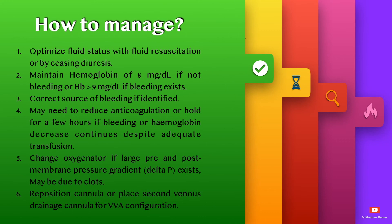How do we manage this issue? Optimize fluid status with fluid resuscitation or by ceasing diuresis. Maintain hemoglobin of 8 g/dL if not bleeding, or greater than 9 g/dL if bleeding exists. Correct the source of bleeding if identified.